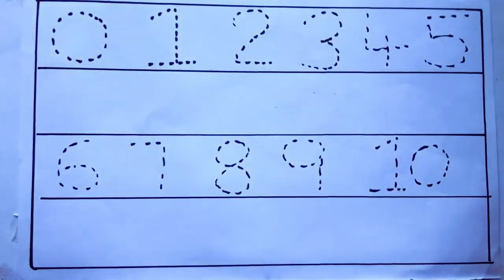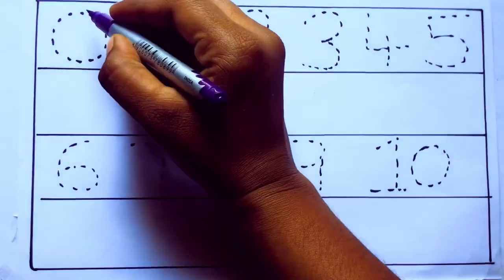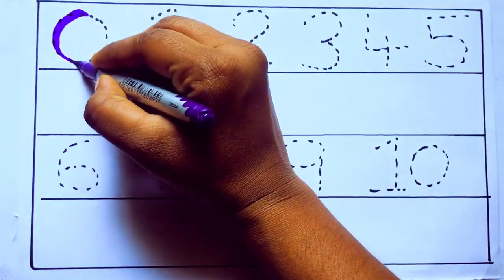Let's draw numbers. Violet color, 0, Z-E-R-O.